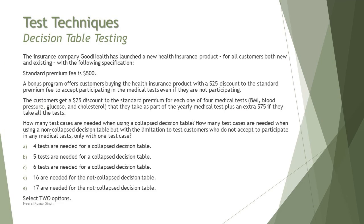Looking back at the answer options, C is the correct answer: six test cases are needed for the collapsed decision table, and E is also correct: 17 test cases are needed for the non-collapsed table. While one might wonder about further combinations — perhaps 32 or more — those would be exhaustive and not practically manageable, which is exactly where the decision table technique fits.